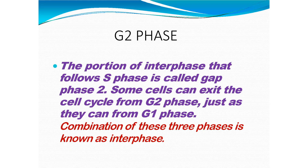G2 phase: the portion of interphase that follows S phase is called the Gap 2 phase, or the second growth phase. In this stage, the cell keeps on growing and preparing itself for mitotic cell division. Some cells can exit the cell cycle from G2 phase, just as they can from G1 phase. The combination of all three phases — G1, S, and G2 — is called interphase.